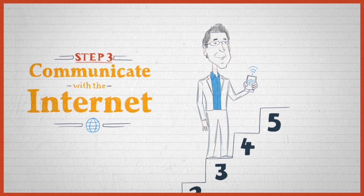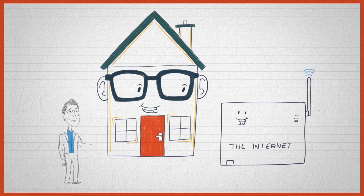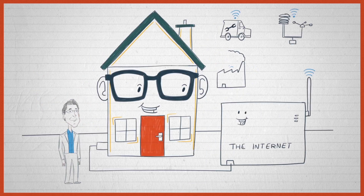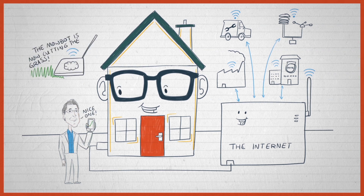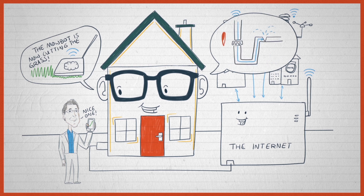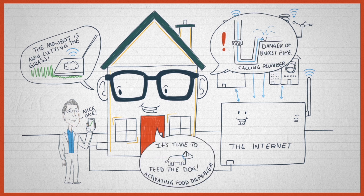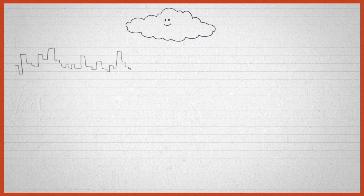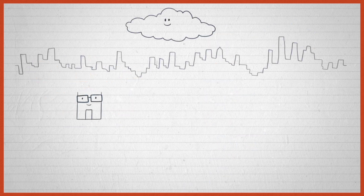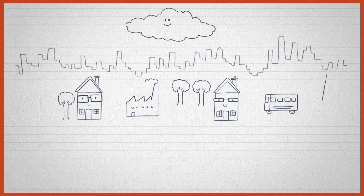Step three: we need the thing to communicate with the internet, so we've got to add a voice and some ears to that. We need connectivity. Now that connectivity could be wired, like a USB connector on your laptop, or it could be wireless, like a phone connection.